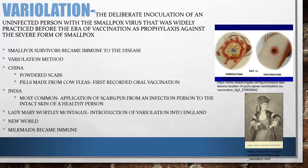This method of variolation began when physicians realized that smallpox survivors became immune to the disease. Physicians would take samples — pus, ground scabs, vesicles from mildly diseased patients — and introduce the material into healthy patients. They hoped that giving a healthy person such a small amount would cause their body to recognize the disease and learn how to fight it off.